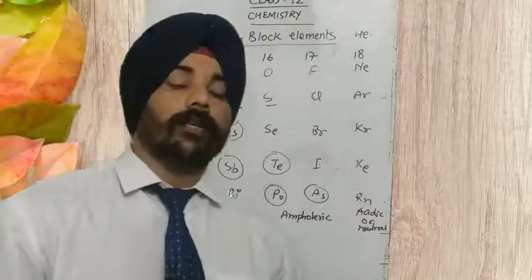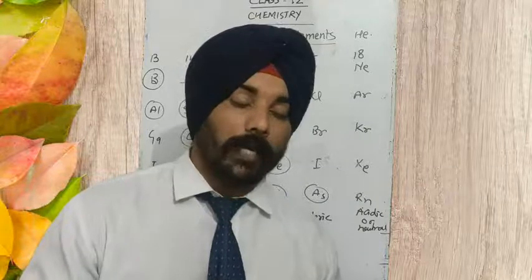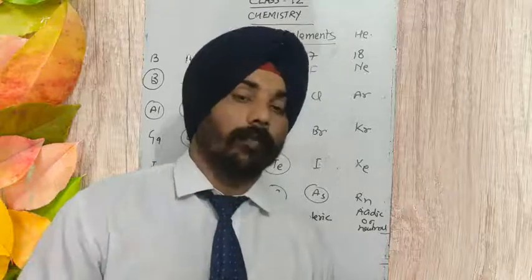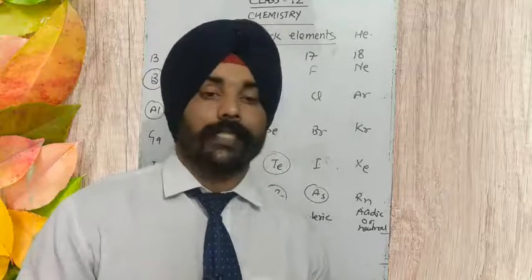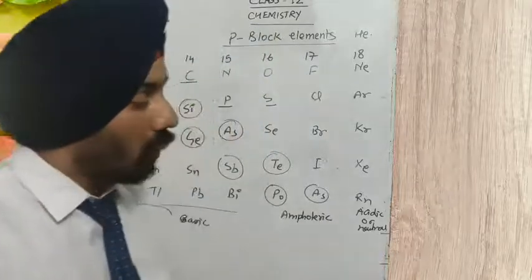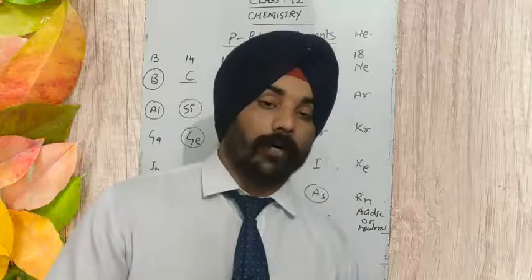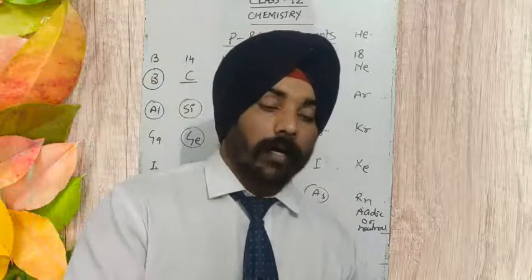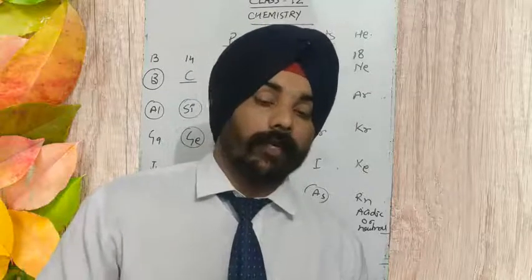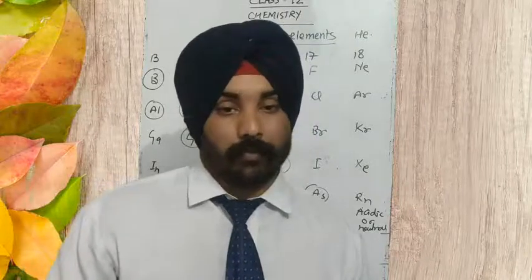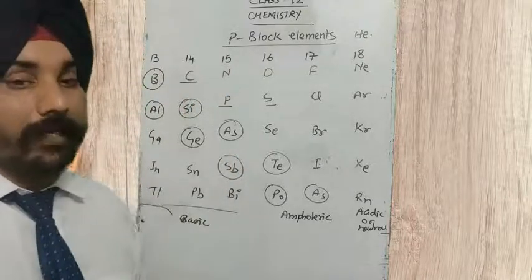So if we talk about the common trend of the basic or acidic character of the oxides of P block elements along the period and down the group — one thing you have to keep in mind: if the metal is more electropositive, its basic character will be more. If it is more electronegative, its basic character is least and acidic character is more. So let's see how the trend of the oxides of these elements is going to change.